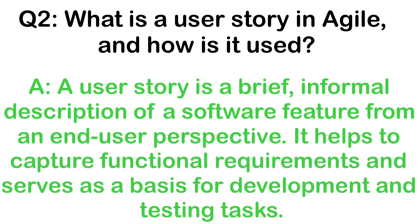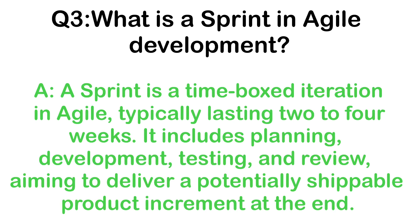What is a user story in Agile, and how is it used? A user story is a brief and formal description of a software feature from an end user or customer perspective. It helps to capture functional requirements and serves as a basis for development and testing tasks. A sprint is a time-boxed iteration in Agile, typically lasting two to four weeks. It includes planning, development, testing, and review, aiming to deliver a potentially shippable product increment at the end.